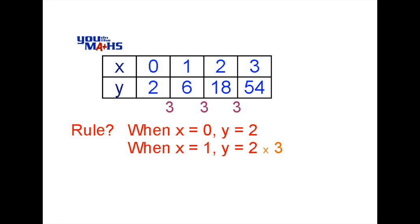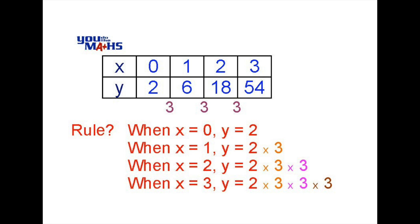Likewise when we have a look at the next x value, x equals 2, the y value is 18. That's the previous y value of 6 multiplied by 3, or as we can see here, 2 multiplied by 3, multiplied by 3. And if we go across to the next x value, when x equals 3, y is multiplied by 3 again. So we get a result of 54, or 2 multiplied by 3, multiplied by 3, multiplied by 3.